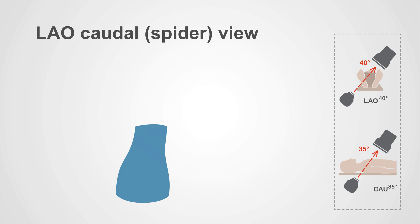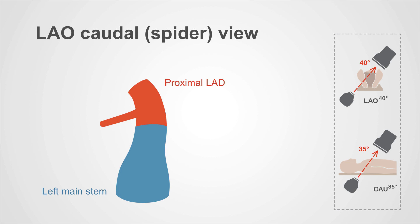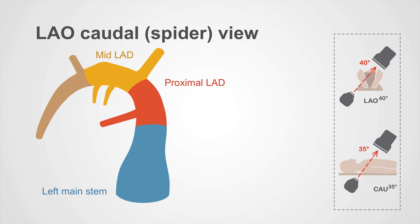Here's the left main stem coming off the aorta. You can see that it branches first to form the proximal LAD, which continues to form the mid-LAD and then the distal LAD. In the spider view, the LAD goes off to the left-hand side of the screen.